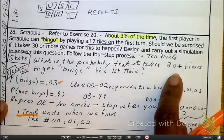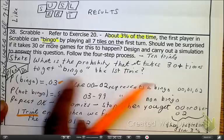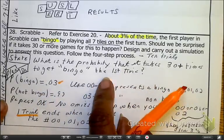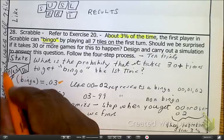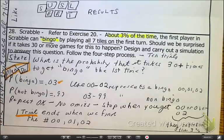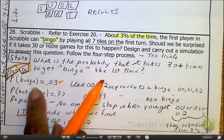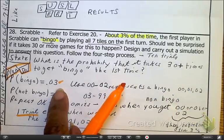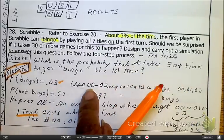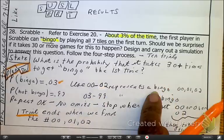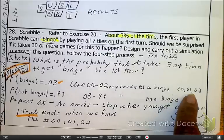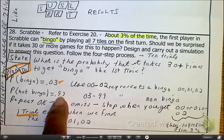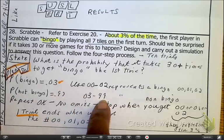What is the probability that it takes 30-plus times to get a bingo for the first time? I want to stick our plan and our to-do all together because it does merge. The probability of getting a bingo is going to be 3%. And I'm going to use here the 0-0 through 0-2 to represent the bingo. So I'm using 0-0, 0-1, and 0-2.